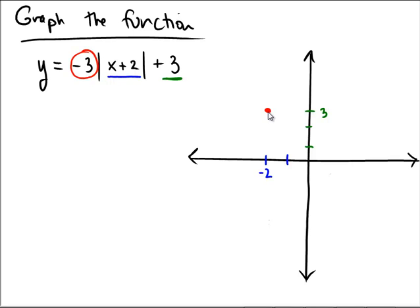That would mean that from this point right here, we would have to go down 3 and over 1. And on the other side, we would go down 3 and left 1. So just by plotting those two points, I can now create my absolute value graph.